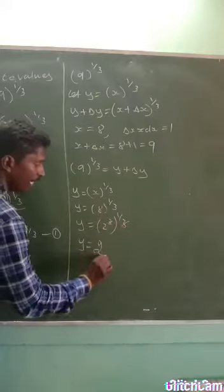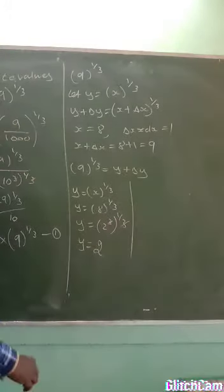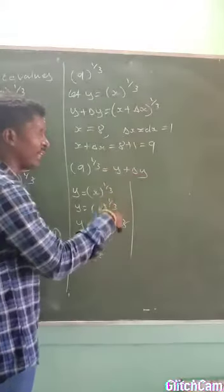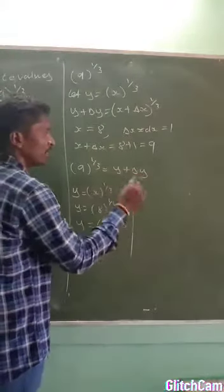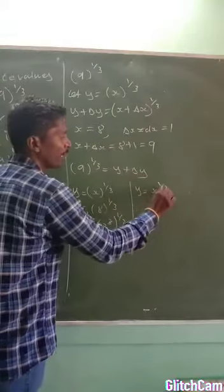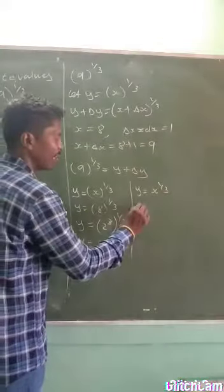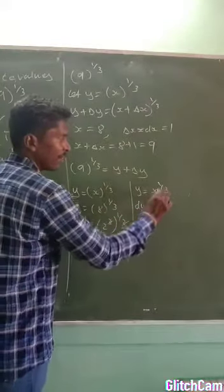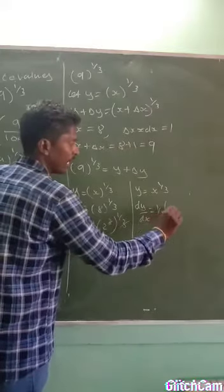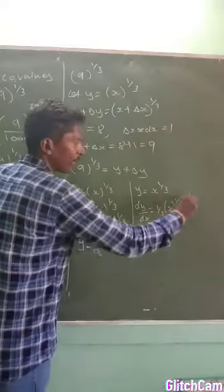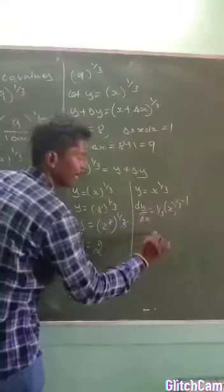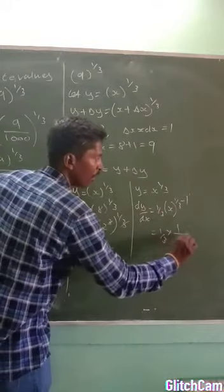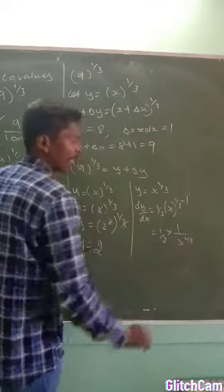So we get y = 8^(1/3) = (2^3)^(1/3), and the powers 3 and 1/3 cancel, giving y = 2. Now we are going to find δy. Before finding δy, we first find dy. We have y = x^(1/3), and differentiating gives dy/dx = (1/3) · x^(1/3 - 1).